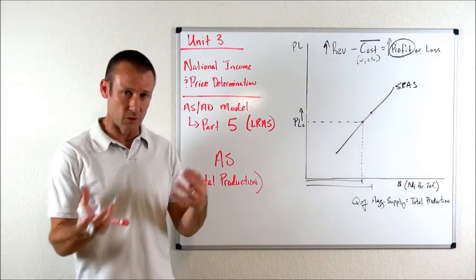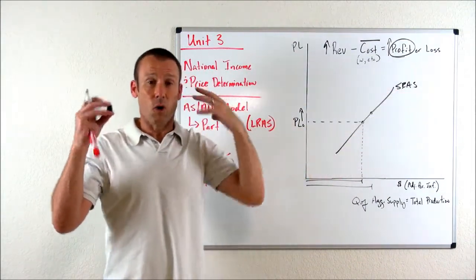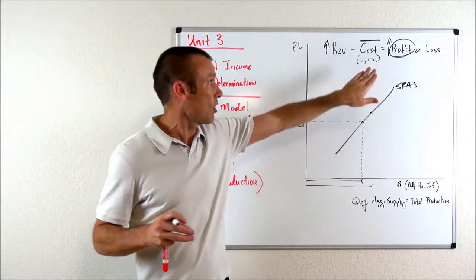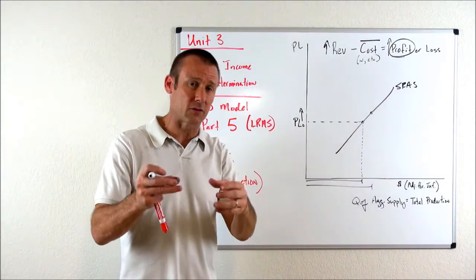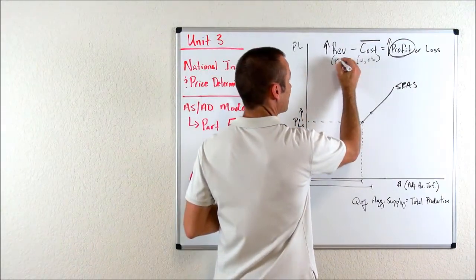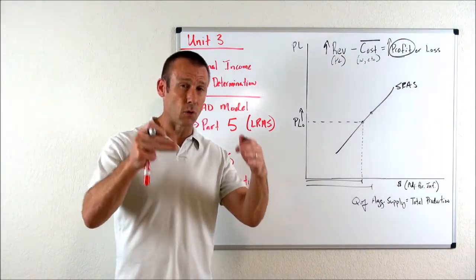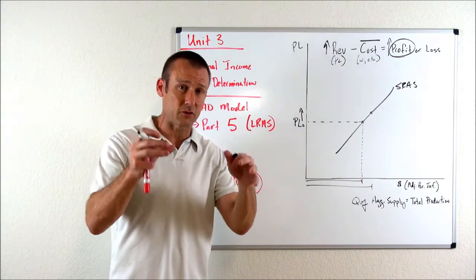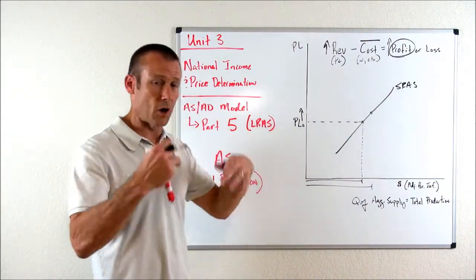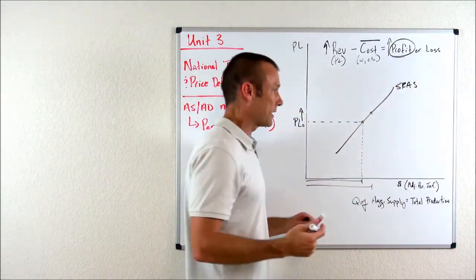The short run is defined as that time period when cost of production — especially wages — lag behind changes in the price level. We're associating the price level with the revenues of business. So what's the short run? The short run is the time period when costs, especially wages, lag behind changes in the price level. Price level goes up, costs lag behind, it becomes profitable to produce, so we will produce more. And that gives us an upward sloping AS curve.